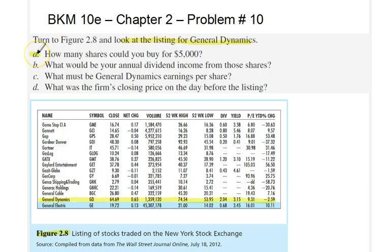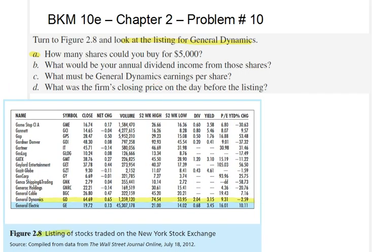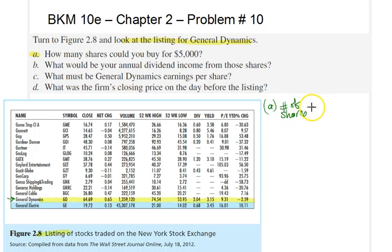In part A of this problem, the question is to find the number of shares we can buy with five thousand dollars. The number of shares would simply be equal to our total investment, which is five thousand dollars, divided by the price per share. The price per share was sixty-four dollars and sixty-nine cents.